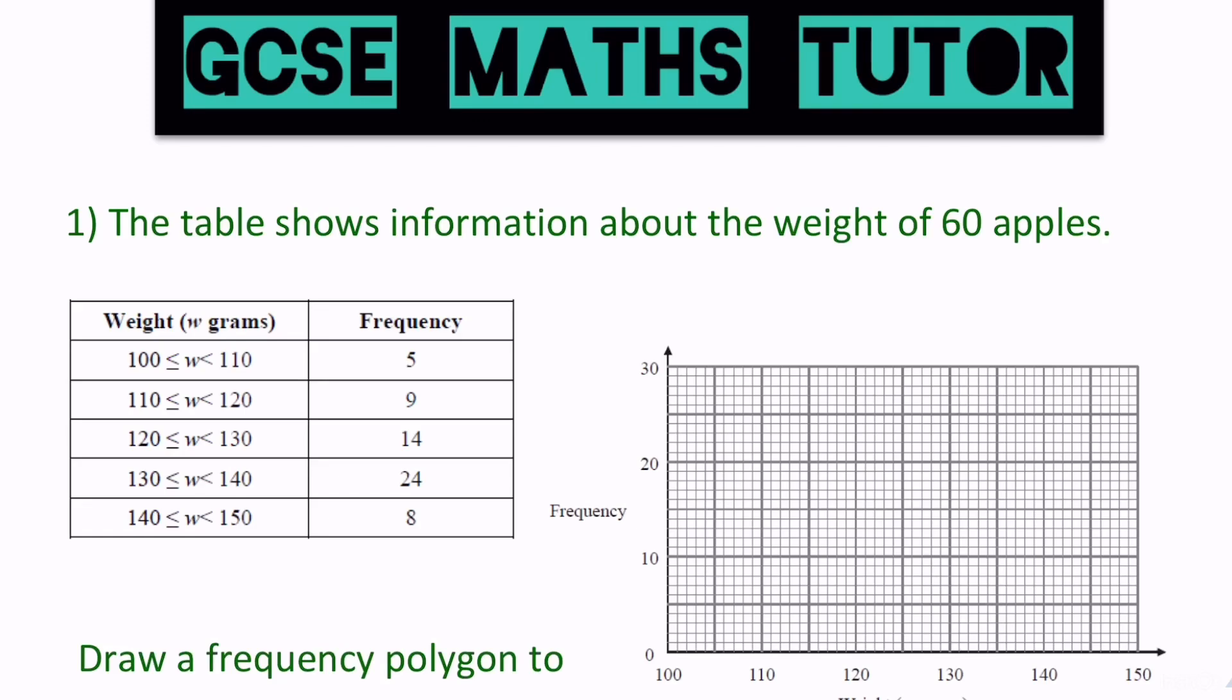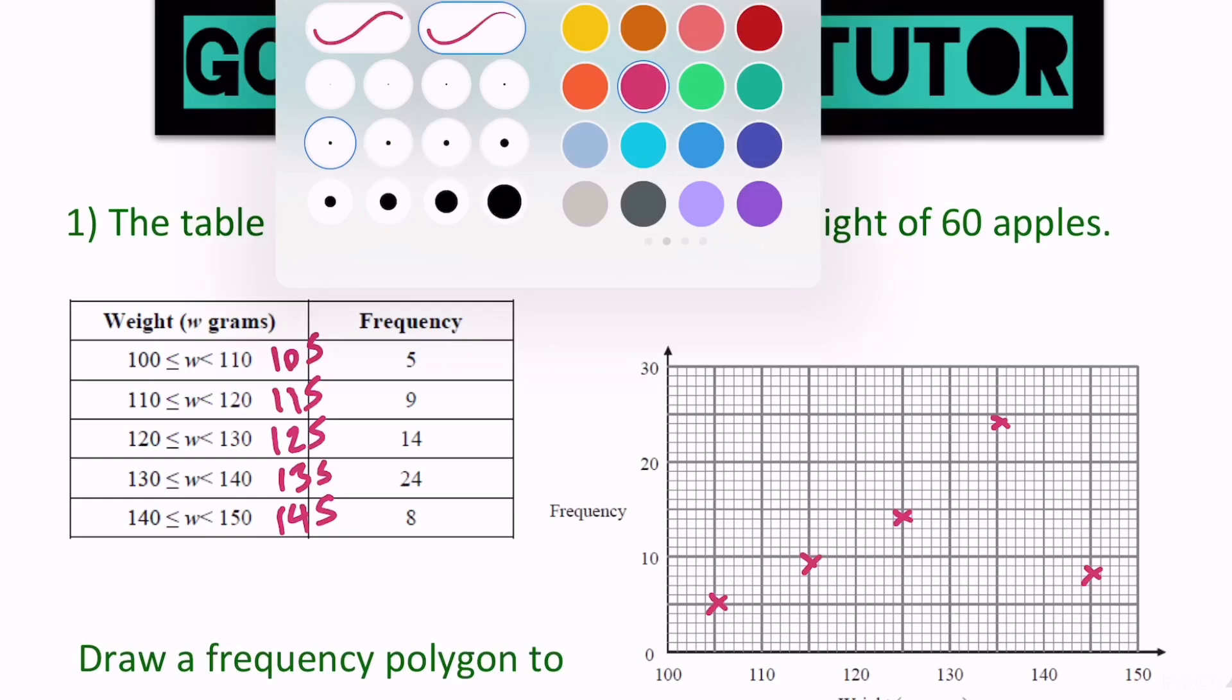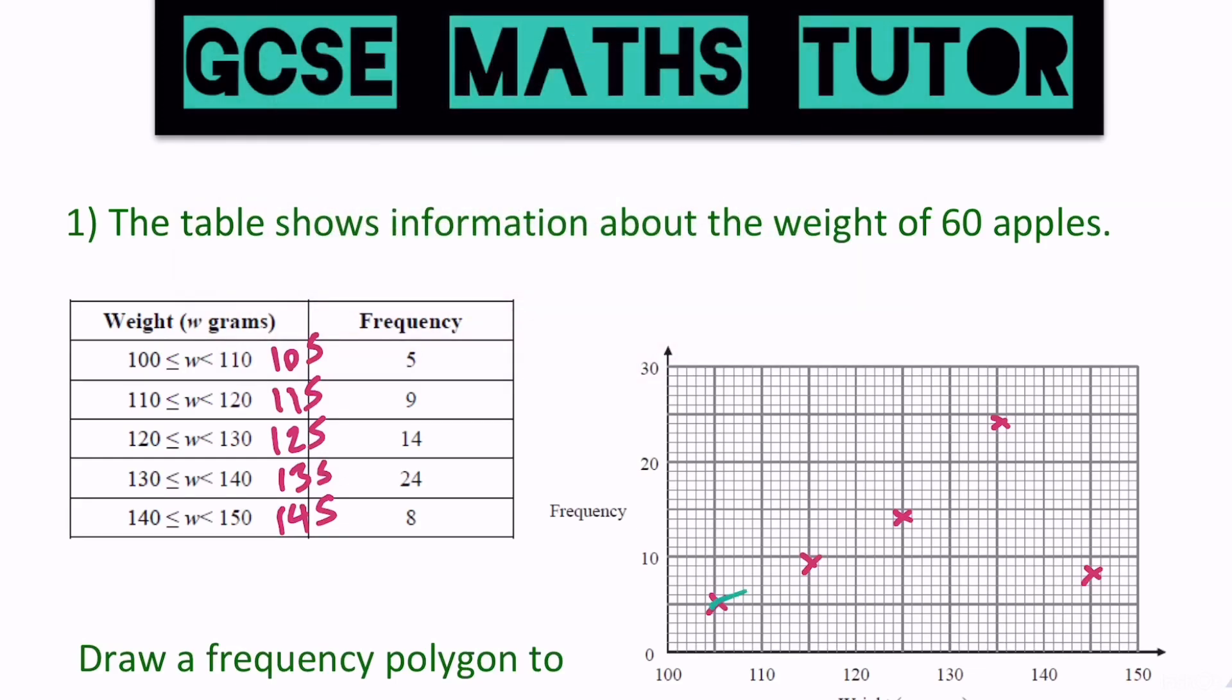Right, okay, answers for these then. So the midpoints of the first one, between 100 and 110 is 105, then we've got 115, 125, 135, and 145. And plotting those onto our frequency polygon down here, we've got 105 going up to 5, we've got 115 going up to 9, we've got 125 going up to 14, let's have a look, I'll try this as quick as I can, 135 going up to 24, and 145 going up to 8, there we go, and just joining that up nice and neat with the ruler and pencil again, one, two, three, and joining up the last one, and there's your frequency polygon, so it should look like that, making sure it's on the midpoints.